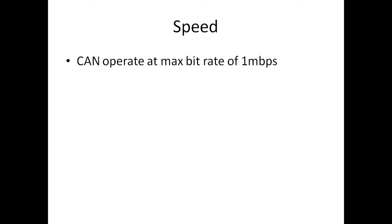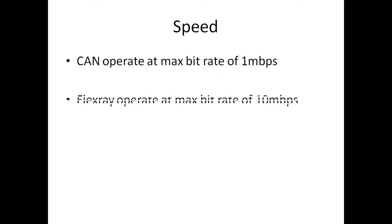With respect to speed, CAN operates at a max bit rate of 1 Mbps. Usually for most of the automotive applications, the industry doesn't go for 1 Mbps — they set it for 500 Kbps. Whereas FlexRay is 10 times faster than CAN, which has a max bit rate of 10 Mbps.